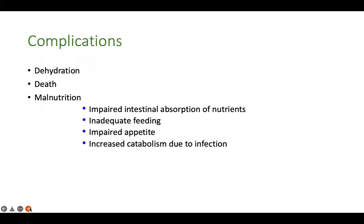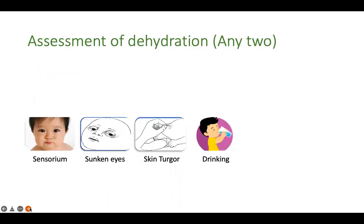The major complication is dehydration, and when dehydration is severe it can lead to death. Diarrhea can also cause malnutrition because during the period of diarrhea, absorption of nutrients is impaired. Along with that, there may be inadequate or inappropriate feeding, impaired appetite, and increased catabolism — all of which favor malnutrition. A child with borderline malnutrition may become severely malnourished once diarrhea develops.